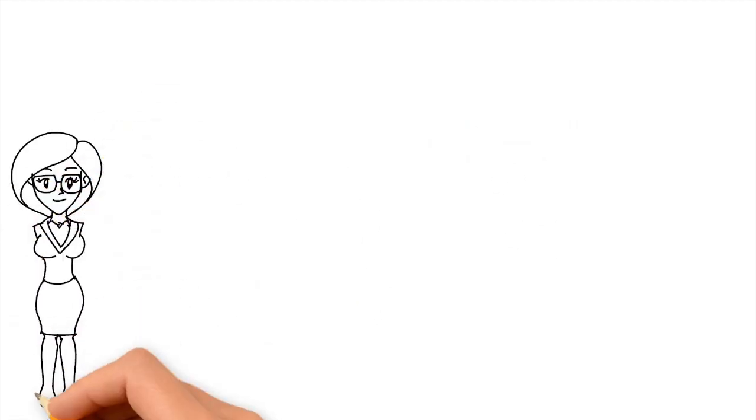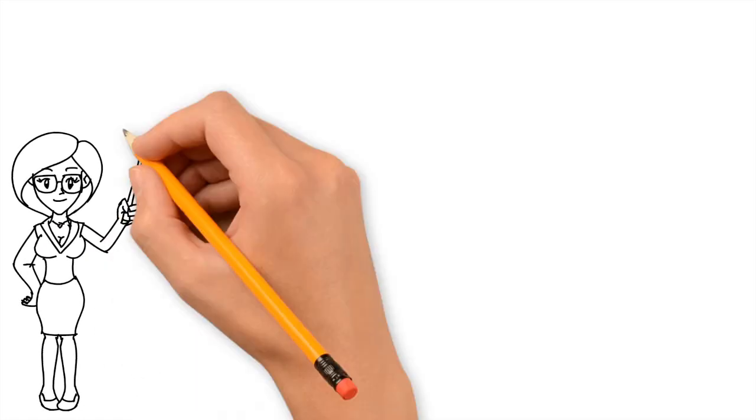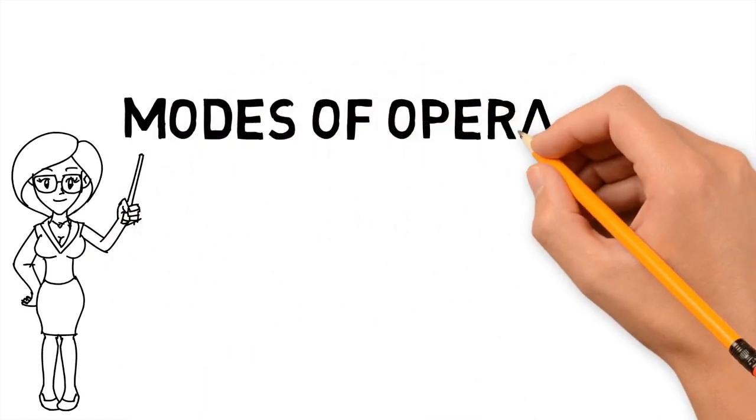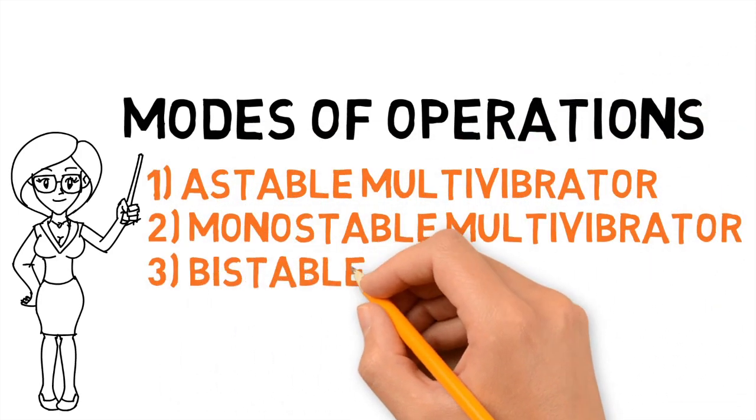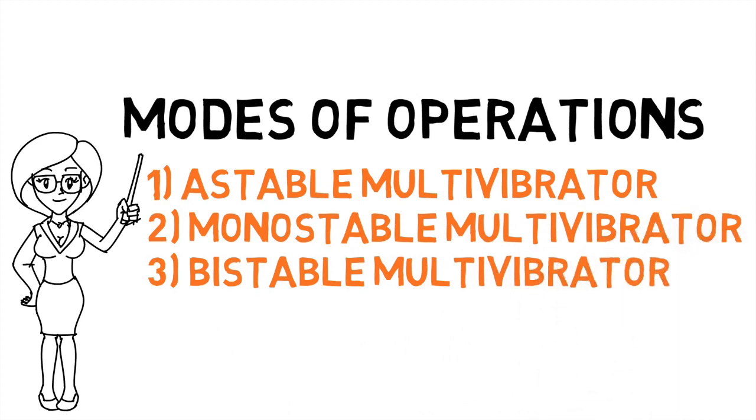The next part of our topic is mode of operation. IC 555 has three main operating modes. Those are a stable multivibrator, monostable multivibrator and bi-stable multivibrator. Each mode represents a different type of circuit and has a particular output. The one which we are going to study now is an A-stable multivibrator. So without any further delay, let's move towards it.